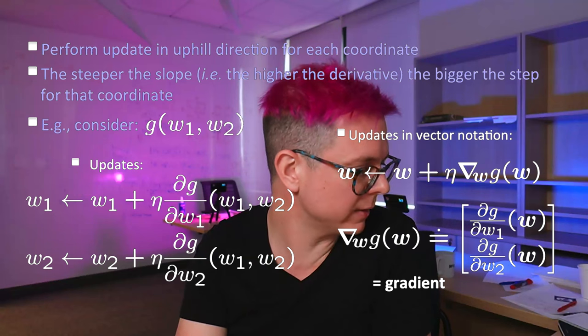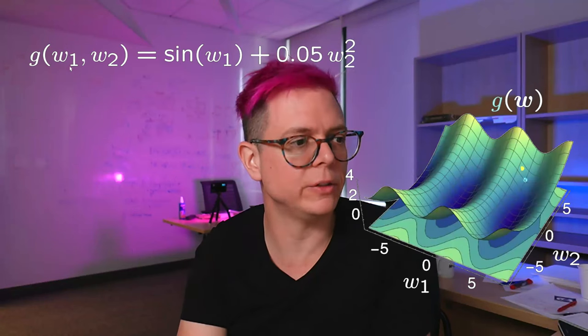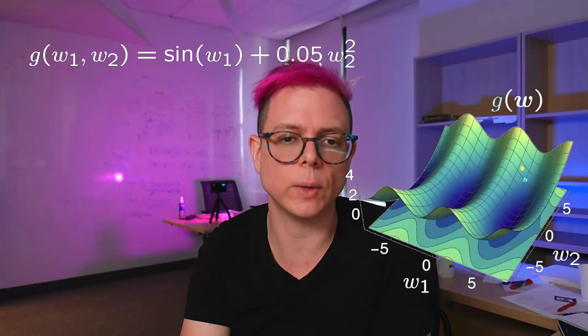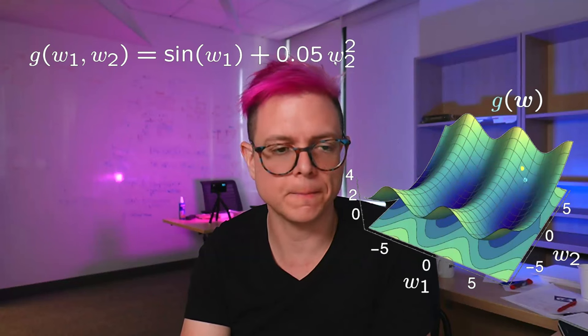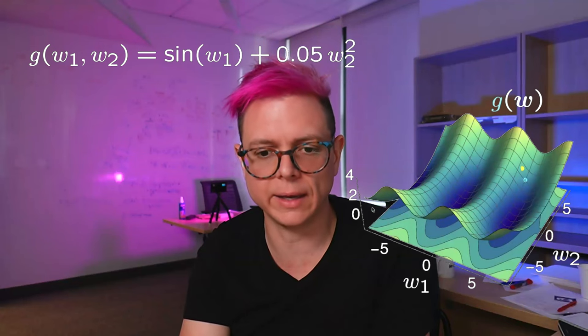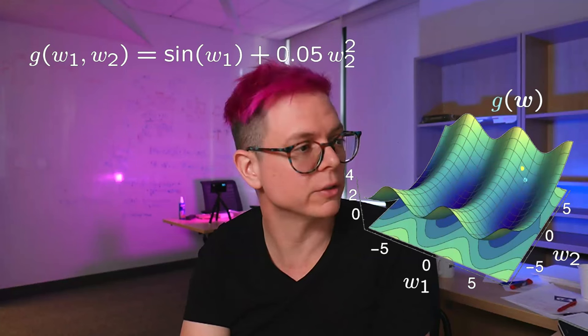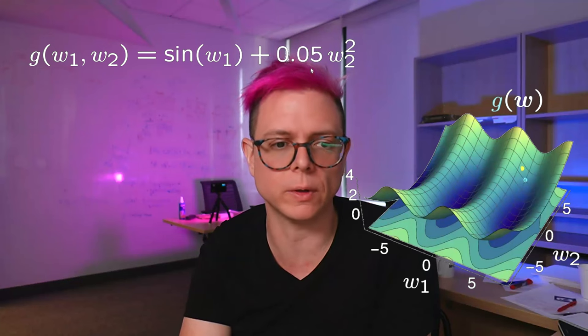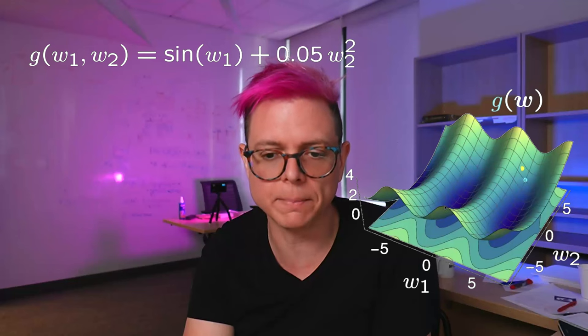To make this more concrete: G(W1, W2) is defined as sin(W1) plus (1/20) times W2 squared. Over W1 it looks like a sine function; over W2 it looks like a very open parabola. The partial derivative of G with respect to W1 is cos(W1), and with respect to W2 is 0.1 times W2. These are the two partial derivatives that make up the gradient.